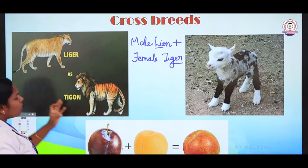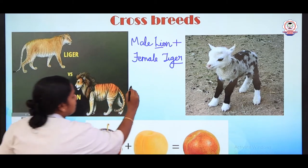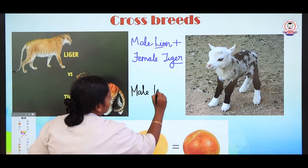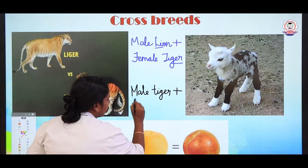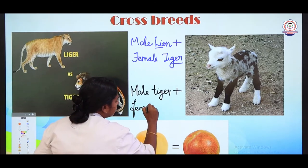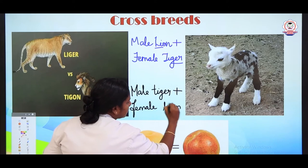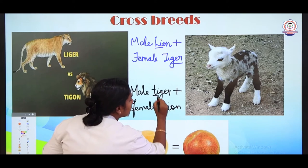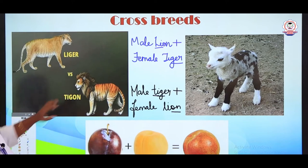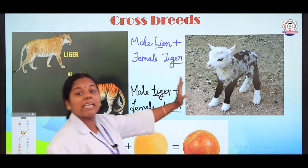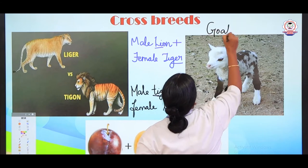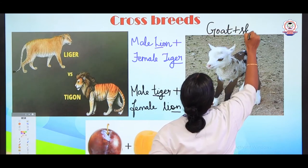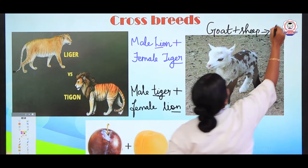And next, there is also the tigon — male tiger crossed with female lion. This is the image of the tigon. These are all cross breeds. And one more example — this is a geep. What is a geep? The cross breed between the goat and sheep. Goat and sheep crossed gives us geep.